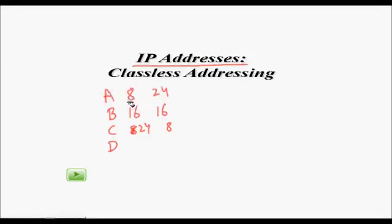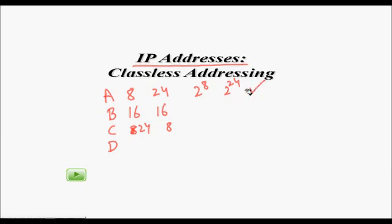The problem was that in Class A there were very few networks — just 2 to the power of 8, which is 256. Each Class A network has 2 to the power of 24 hosts, which is too many for any organization, however large. This means a lot of IP addresses, which are a very costly resource, are simply wasted.